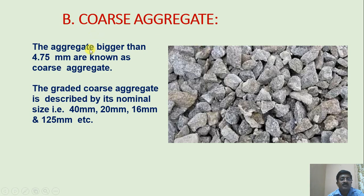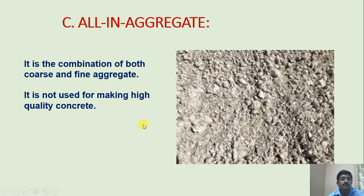Coarse aggregates are aggregates bigger than 4.75 mm. The graded coarse aggregate is described by its nominal size, such as 40 mm, 20 mm, 16 mm and 125 mm. All-in aggregate is the combination of both coarse and fine aggregate. It is a mixture of fine and coarse aggregate but is not used for making high quality concrete.